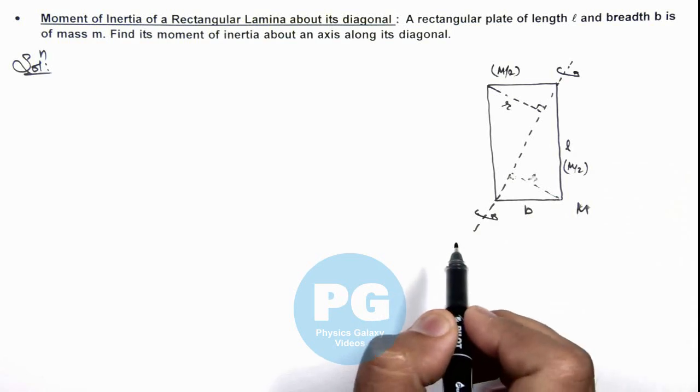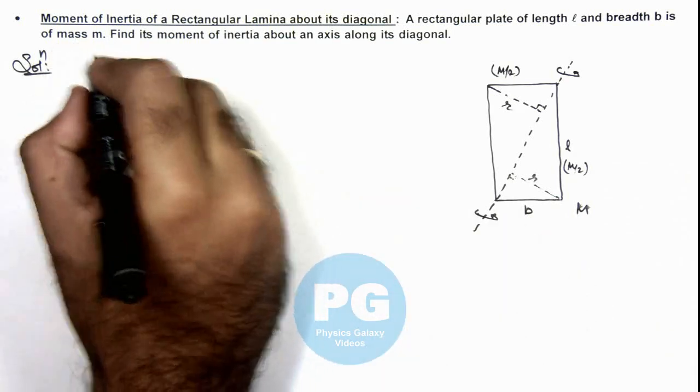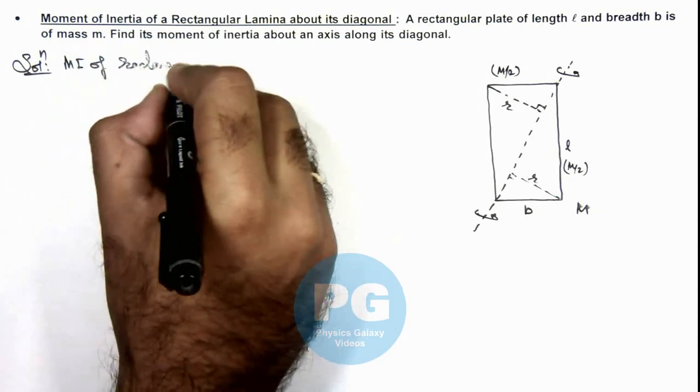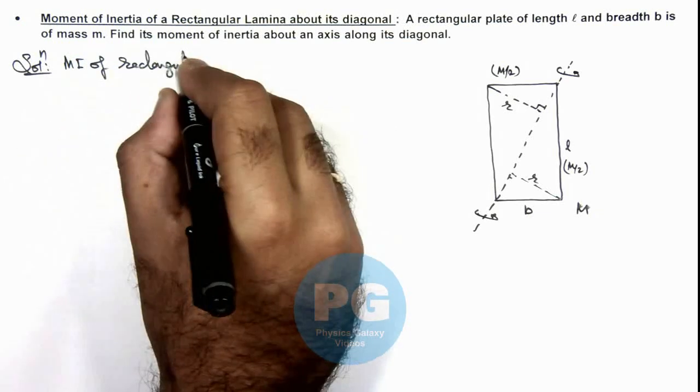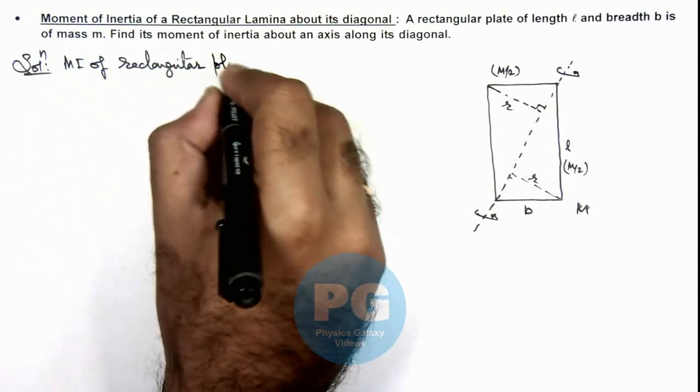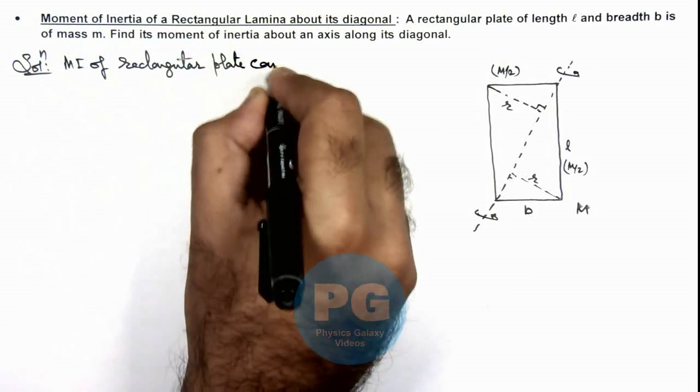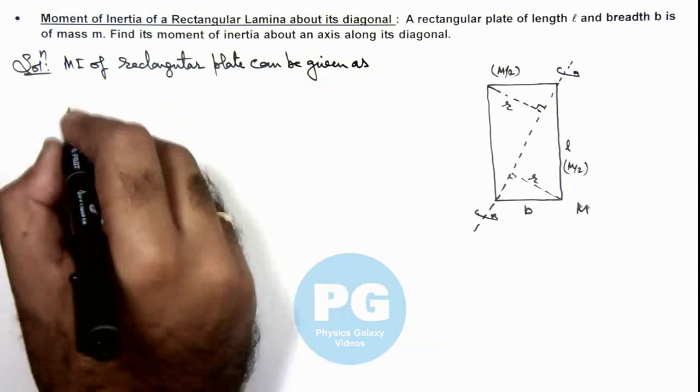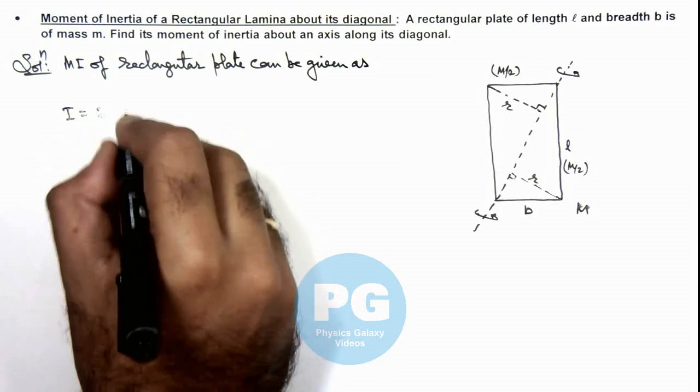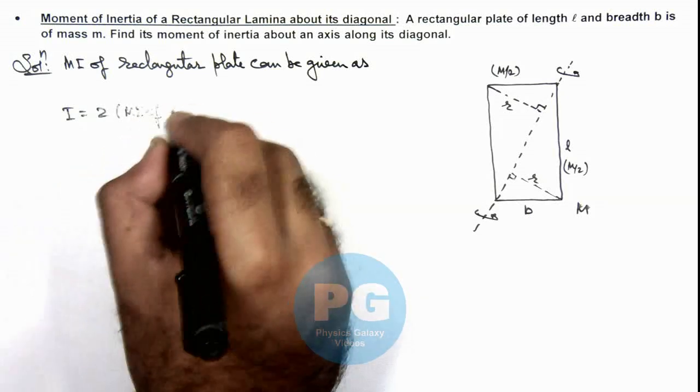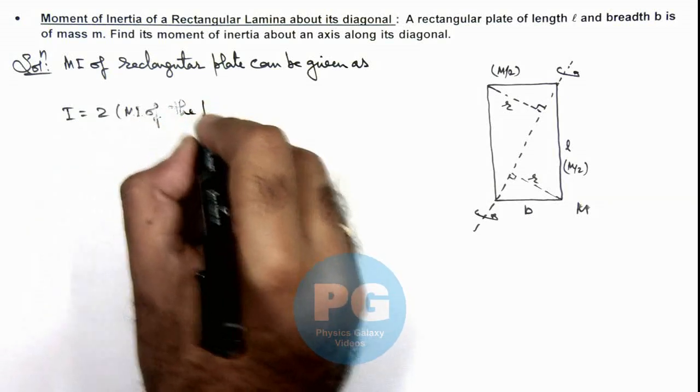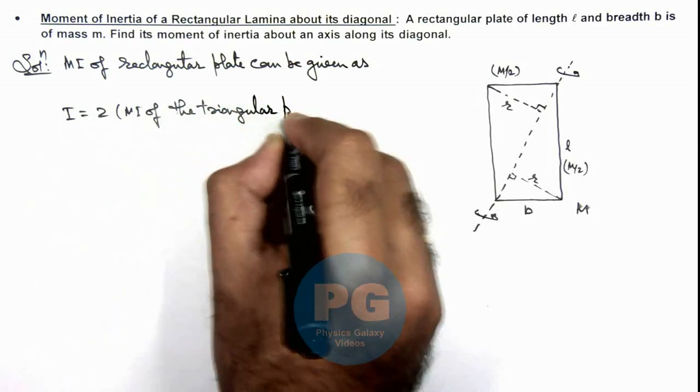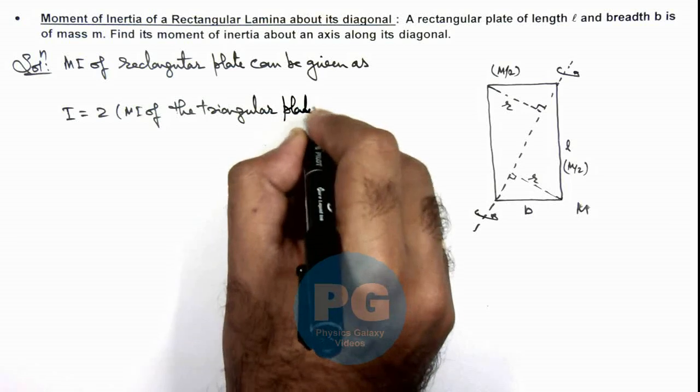And here we can write that moment of inertia of rectangular plate can be given as I is equal to twice the moment of inertia of the triangular plates as shown.